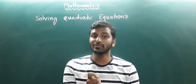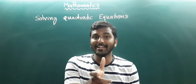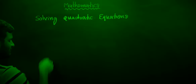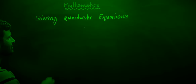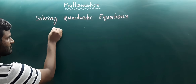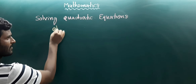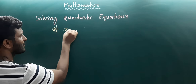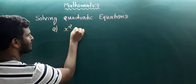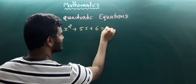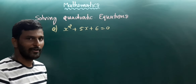How do you solve a quadratic equation easily? Let us explain. Let us take the first question: x squared plus 5x plus 6 equals 0.